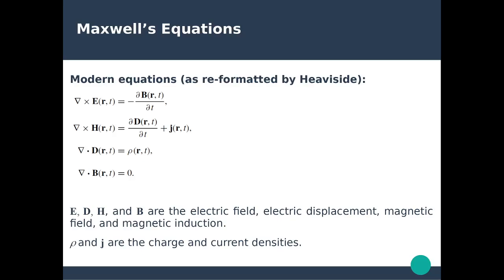Let's start discussing Maxwell's equations as we know them today — the modern equations, reformatted by Oliver Heaviside. These are the four equations in vector form, introducing four fundamental electromagnetic fields: the electric field E, the electric displacement D, the magnetic field H, and the magnetic induction B. In addition, we have two physical quantities: rho, which describes the charge density, and J, which describes the current density.